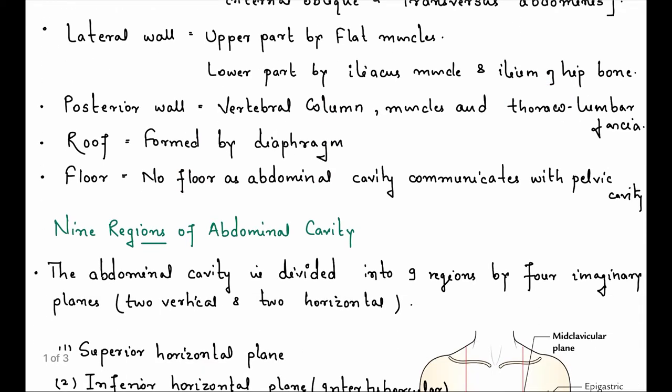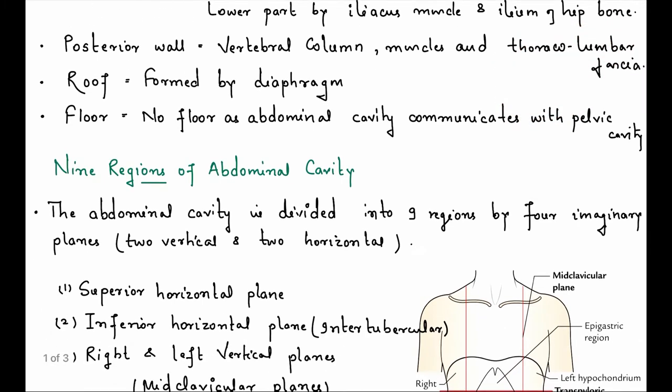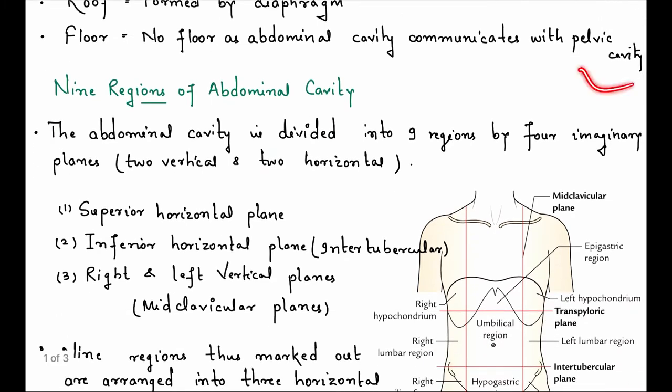Posterior wall - vertebral column, muscles, and thoracolumbar fascia which will be added to your back. Roof - formed by diaphragm. Floor - no floor as abdominal cavity communicates with pelvic cavity.